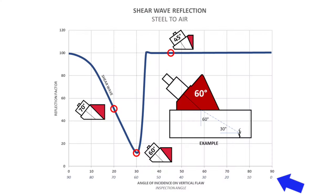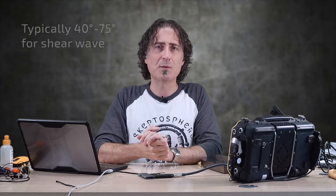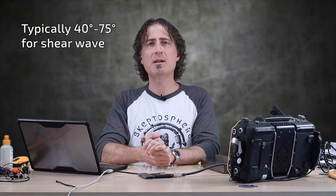On the bottom of the graph, I've got written inspection angle. This is the refracted angle of your beam. So in conventional UT, this might be 45, 60, or 70. In phased array, it could be sort of anywhere between 40 and 75 degrees.